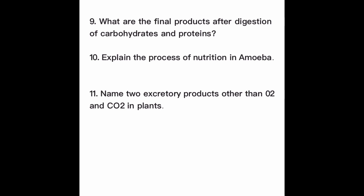Question number 11: Name two excretory products other than oxygen and carbon dioxide in plants. Many students make mistakes here. Simply write resins and gums, which get accumulated in the old xylem or old leaves as waste products other than oxygen and carbon dioxide. No need to explain the entire process of excretion.